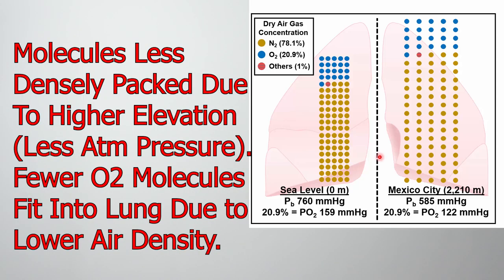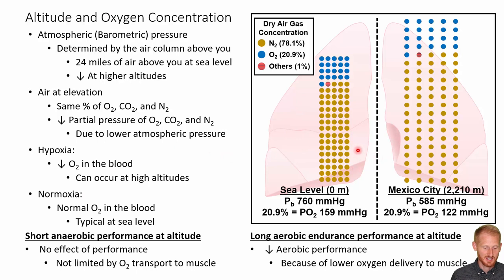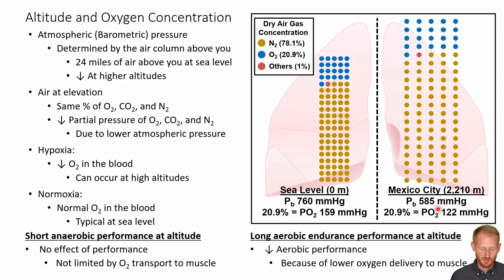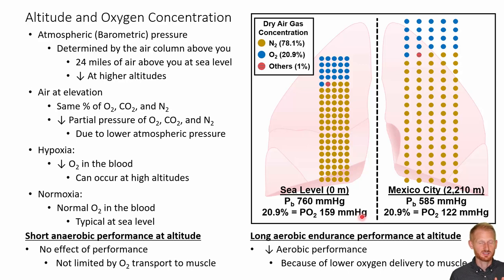Looking at this diagram of the lungs — the left lung we'll say is at sea level, where barometric pressure is about 760 mmHg and oxygen is 20.9% of the atmosphere. The right lung is at Mexico City, at an elevation of about 2,200 meters, where atmospheric pressure is about 585 mmHg, still 20.9% oxygen. At sea level, 20.9% of 760 gives you a partial pressure of oxygen of 159 mmHg. This is the pressure the oxygen applies to the walls of your alveolar sacs, pushing oxygen into your bloodstream.